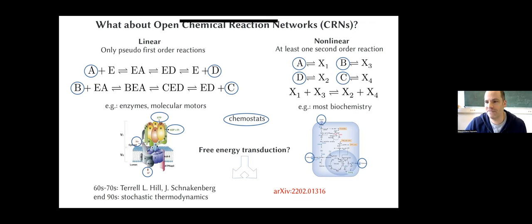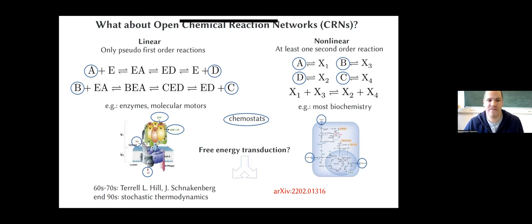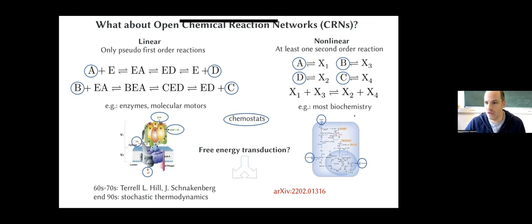People have increasingly looked at the energetics of these kinds of systems. But nonlinear networks are very different because they go beyond unimolecular reactions — they have bimolecular reactions that create dynamical nonlinearities. The methods used to study linear networks, which are based on graph-theoretical methods, cannot be easily extended to nonlinear chemical reaction networks. Nonlinear chemical reaction networks are ubiquitous in biology, and most importantly, metabolism contains a lot of bimolecular reactions.